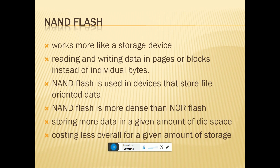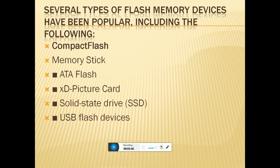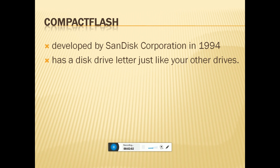NAND flash is used in devices that store file-oriented data. NAND flash is more dense than NOR flash, storing more data in a given amount of space and costing less overall for a given amount of storage. Several types of flash memory devices have been popular, including the following: Compact Flash, Memory Stick, ATA Flash, xD Picture Card, Solid State Drive, SSD, and USB flash drives.